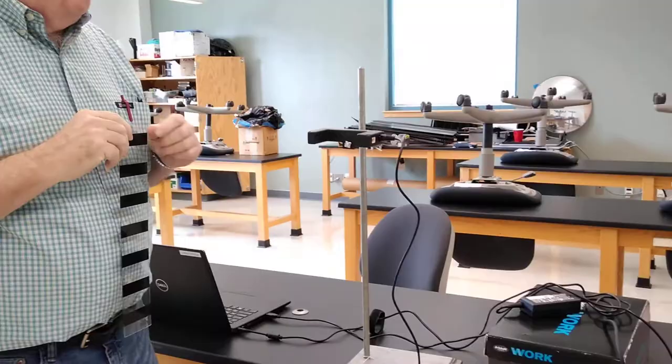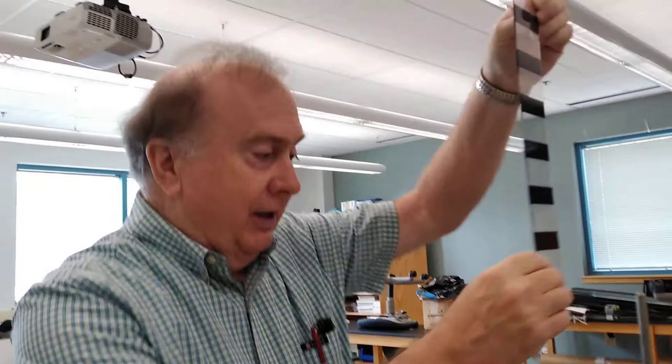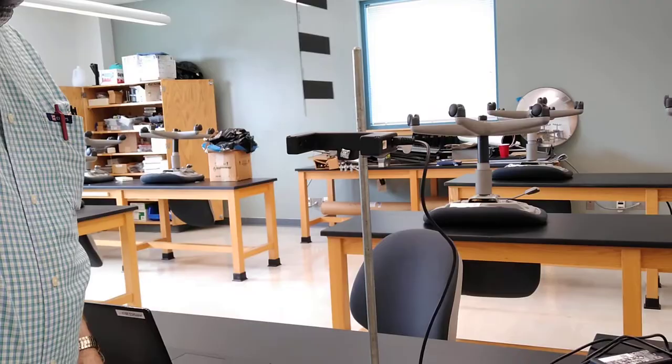We're going to drop it through a photogate. The photogate has an electric eye on it and it's going to pick up the distance on the picket fence and how long it takes to go that distance as the picket fence passes through the photogate.